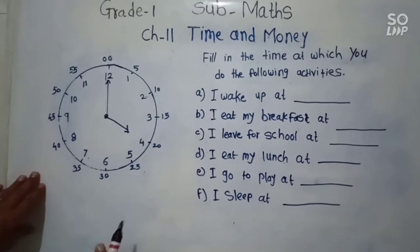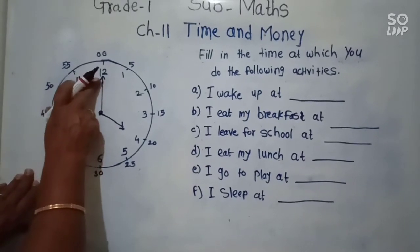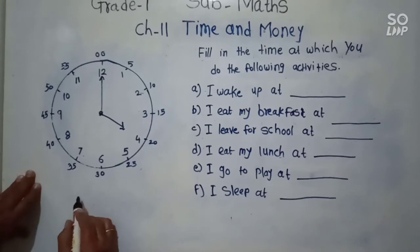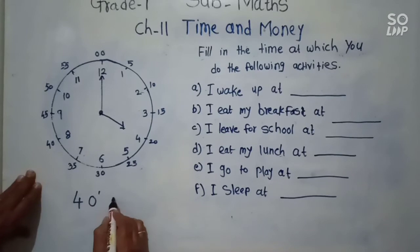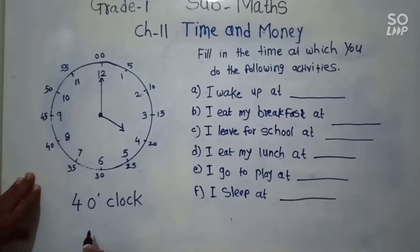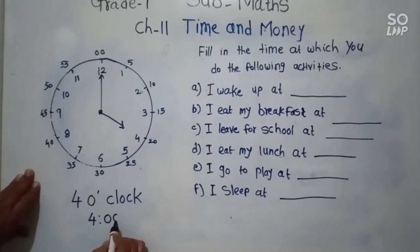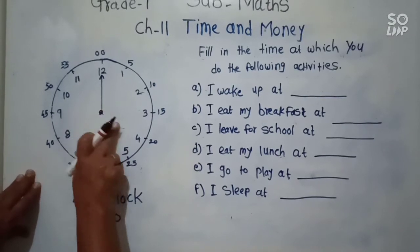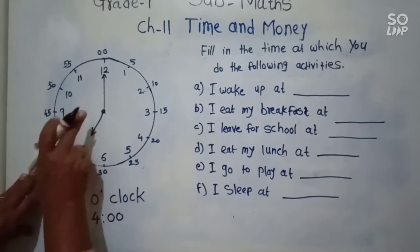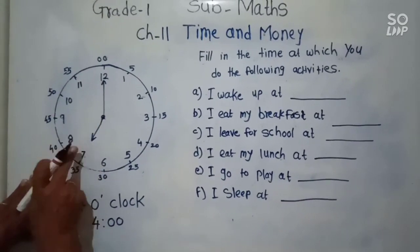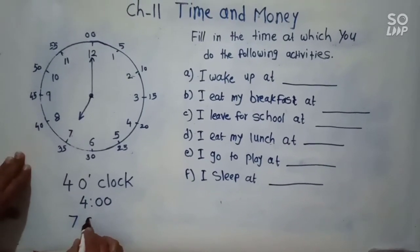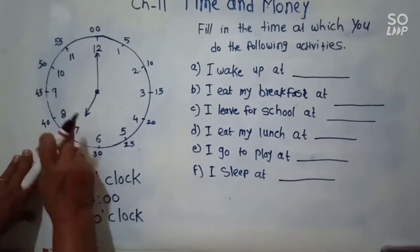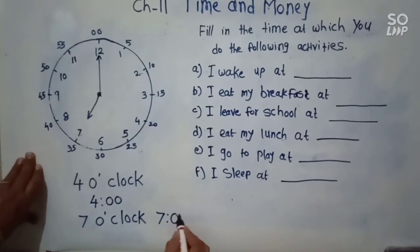Now I will tell you how to read the time. Look here — if the minute hand is on 12 and the hour hand is on 4, then the time is 4 o'clock. We can write it as 4 o'clock. If the hour hand is on 7 and the minute hand is on 12, then the time is 7 o'clock.